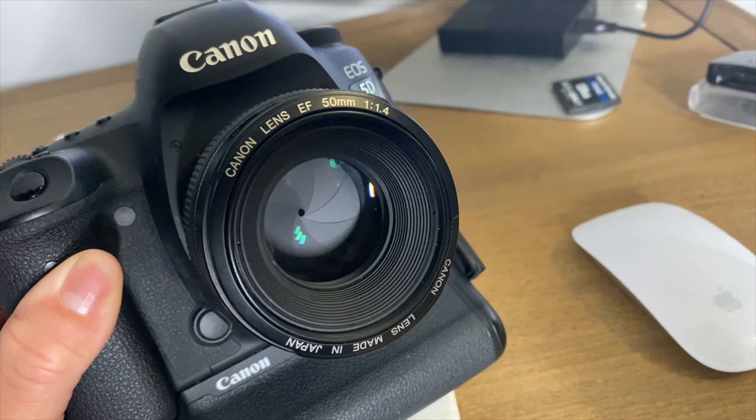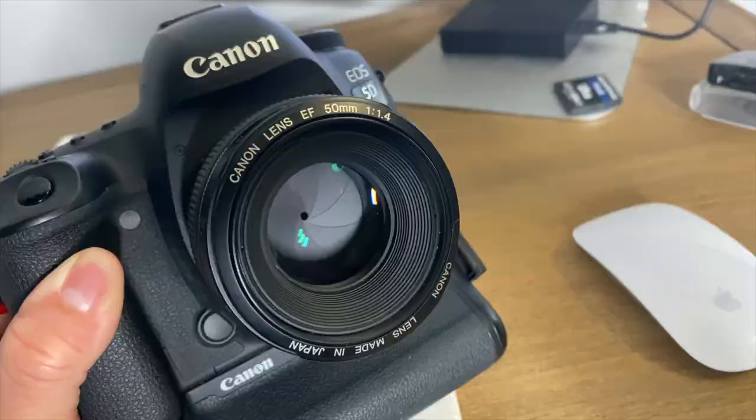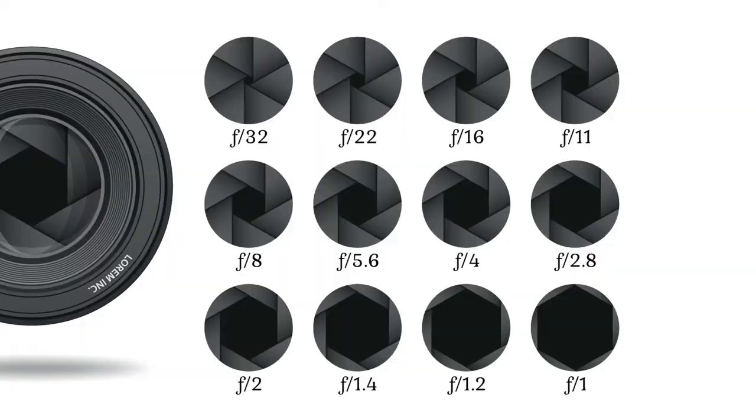A higher f-stop or aperture results in a narrow opening and less light entering the camera. A lower f-stop or aperture results in a larger opening and more light entering the camera.